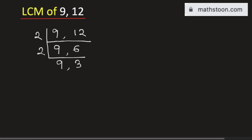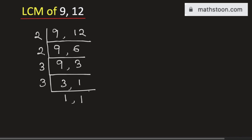Now see that none of these numbers are divisible by 2, so we will go for the next prime number, which is 3. 9 divided by 3 is 3, and 3 divided by 3 is 1. Dividing again by 3, we get 1, 1. Once we get 1, 1, we will stop.